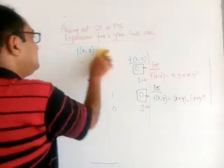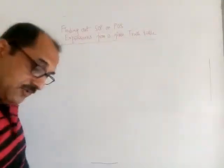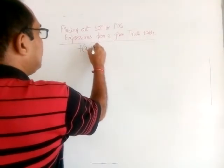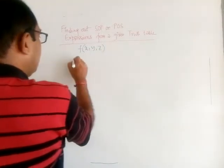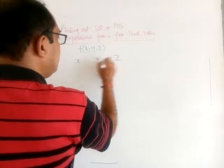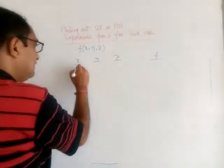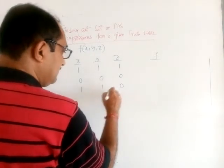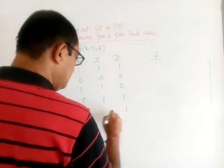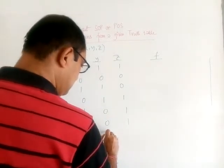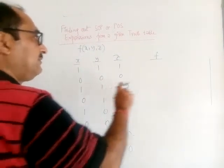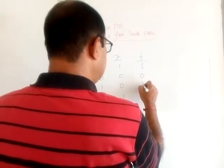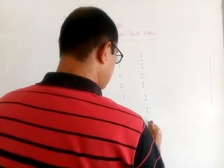I am doing another problem. Now I have given you three variables. I have given you a function f(x, y, z) and the truth table is like this: x, y, z, and the value F. The combinations go from 1,1,1 down to 0,0,0. It is given that the output F is: 1, 0, 1, 1, 1, 1, and the rest are 0s.